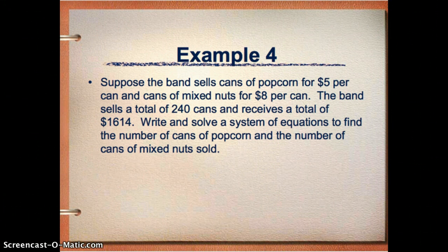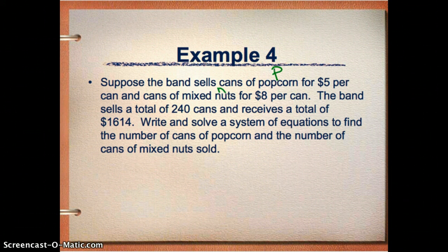All right. So let's try another example. This one, try completely on your own and see if you can get it. So suppose the band sells cans of popcorn for $5 per can and cans of mixed nuts for $8 per can. So I'm going to call popcorn P and mixed nuts N. The band sells a total of 240 cans and receives a total of $1,614. So this seems extremely similar to the last problem.